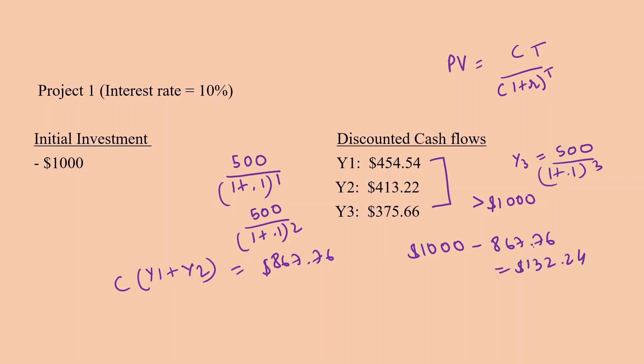Now we still need to pay $132.24 in the third year, and the third year actually pays you $375.66.